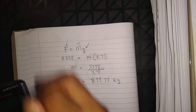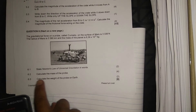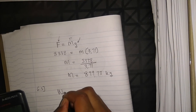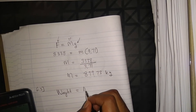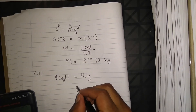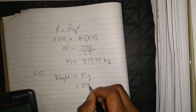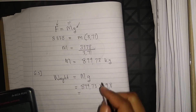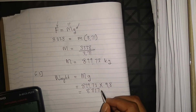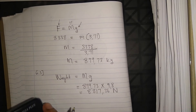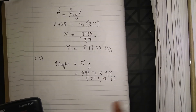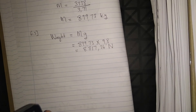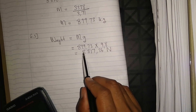Mass of probe equals 3,338 divided by 3.71, which equals approximately 899.73 kilograms. For the next part, calculate the weight of the probe on Earth: W equals mass times gravitational acceleration on Earth, so 899.73 times 9.8 equals approximately 8,817.36 Newtons.